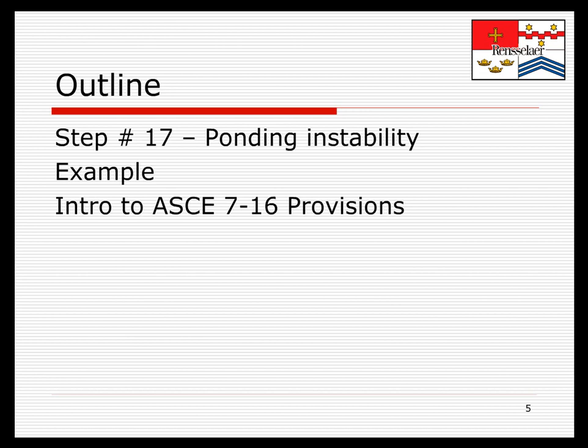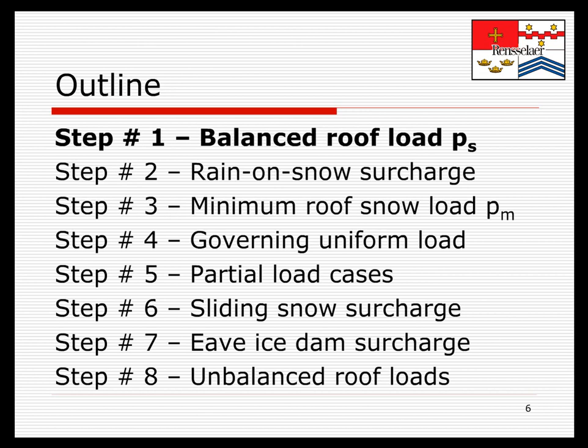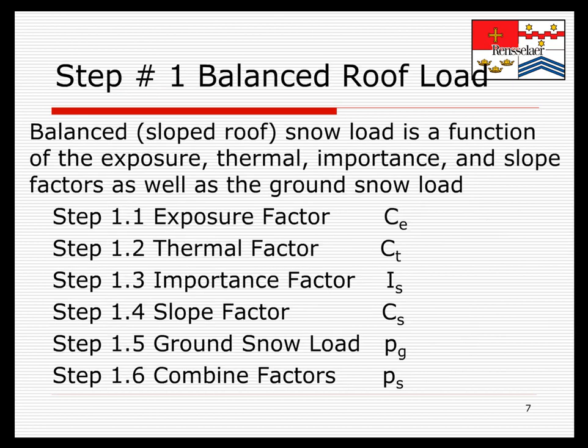The first thing we're going to talk about is the balanced roof load, which is the flat roof snow load Pf. It's a function of a number of parameters: the exposure due to wind, the thermal characteristics of the roof, the importance of the structure, the roof slope, and the ground snow load. All of those things need to be combined. Step one has six sub-steps, and we're going to address each of those in turn.